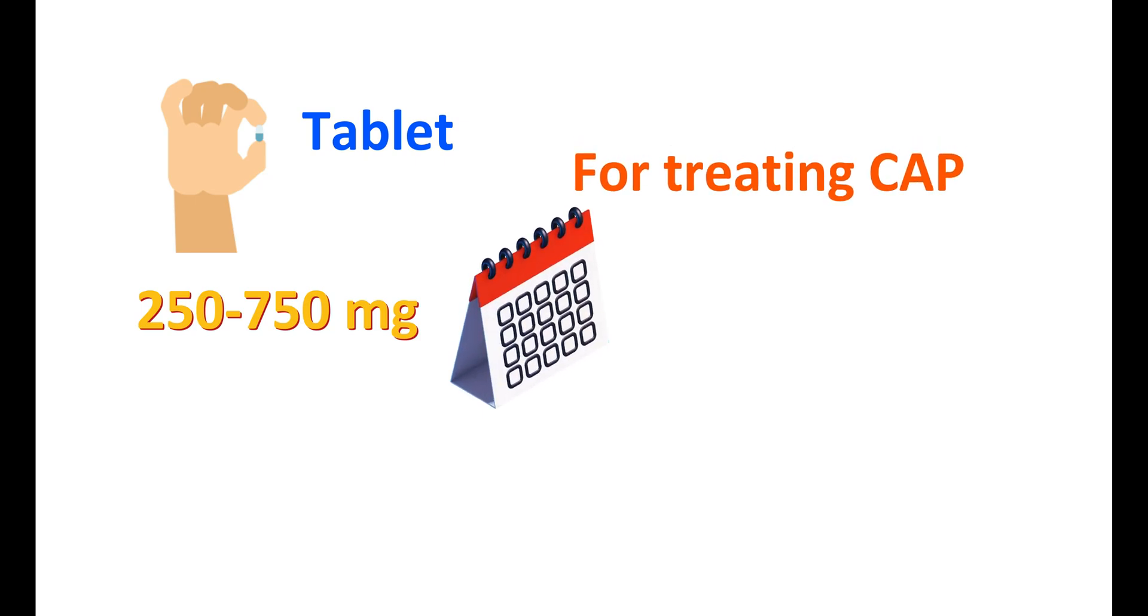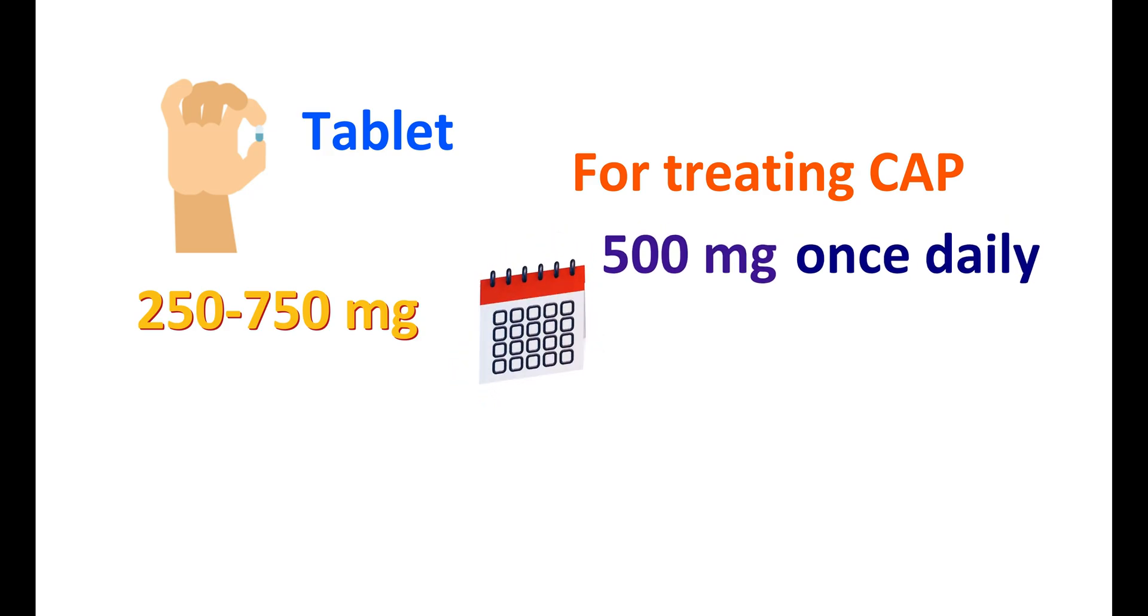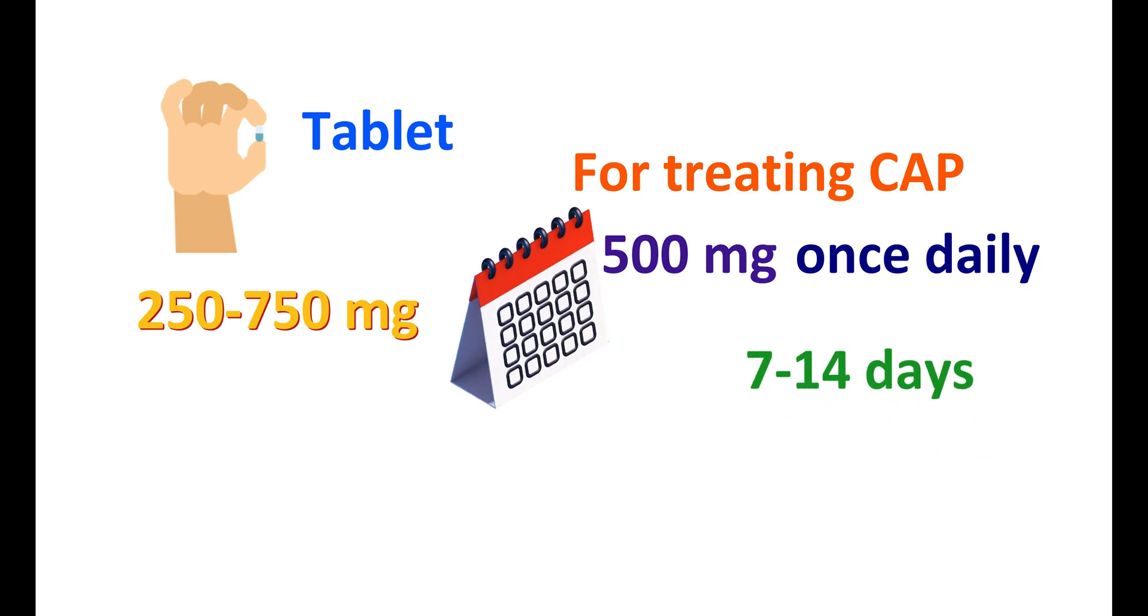For treating community-acquired pneumonia, levofloxacin can be given at a dose of 500 mg once daily and it can be given for 7 to 14 days. Otherwise, it can also be given at a dose of 750 mg for 5 days.